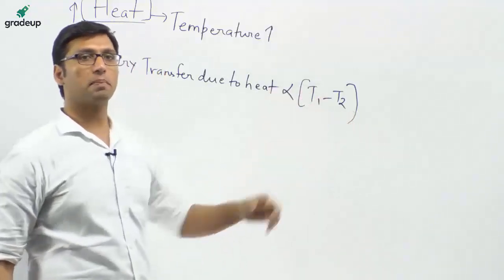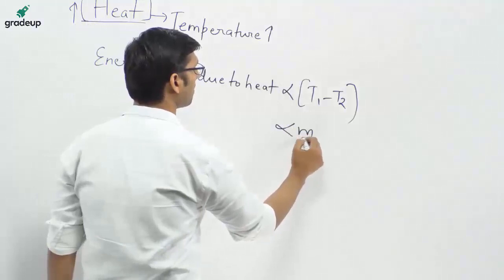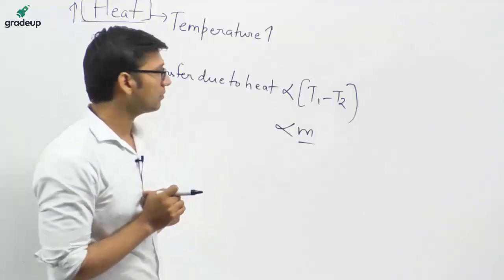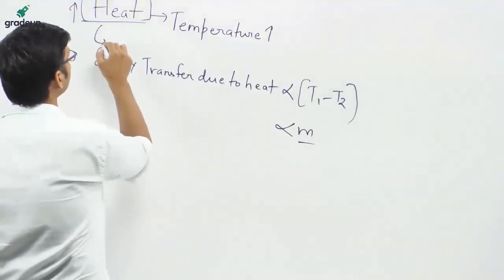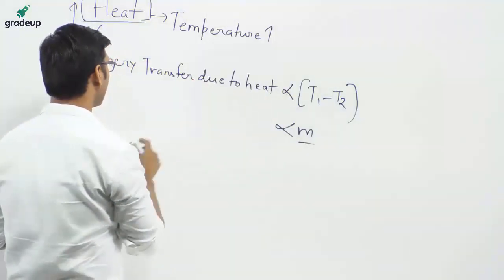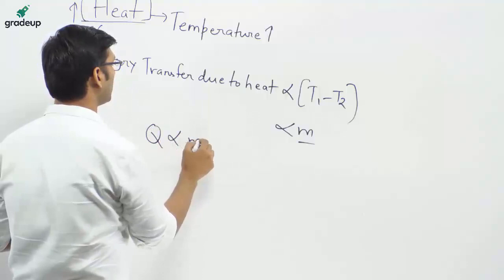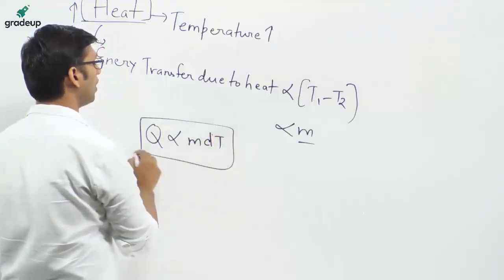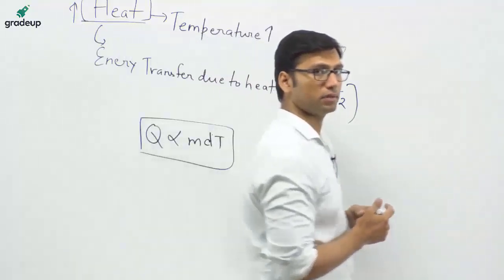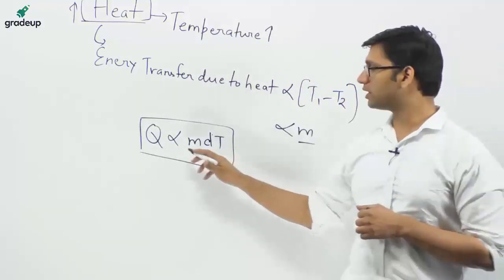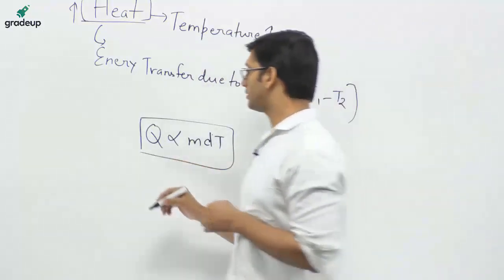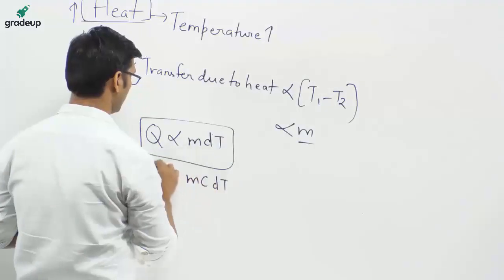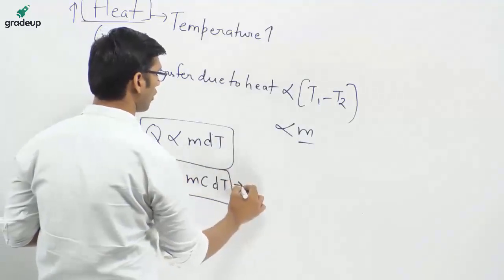Heat transfer is also proportional to the mass of the bodies which are in contact. There is a law called the law of calorimetry which states that Q is directly proportional to mass of the body and the temperature difference. Removing the proportionality constant, you get Q = mC dT. This is known as the law of calorimetry.